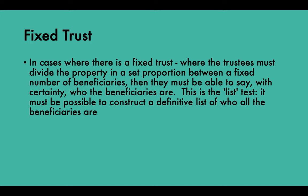A fixed trust is one in which the share or interest of each beneficiary is specified in the trust instrument itself; each beneficiary owns the equitable interest allocated to them. This is contrasted with a discretionary trust, where the trustees hold the trust property for such members of a class of beneficiaries as they shall in their absolute discretion determine. Under a discretionary trust, no beneficiary owns any part of the trust fund unless and until the trustees have exercised their discretion in their favour.